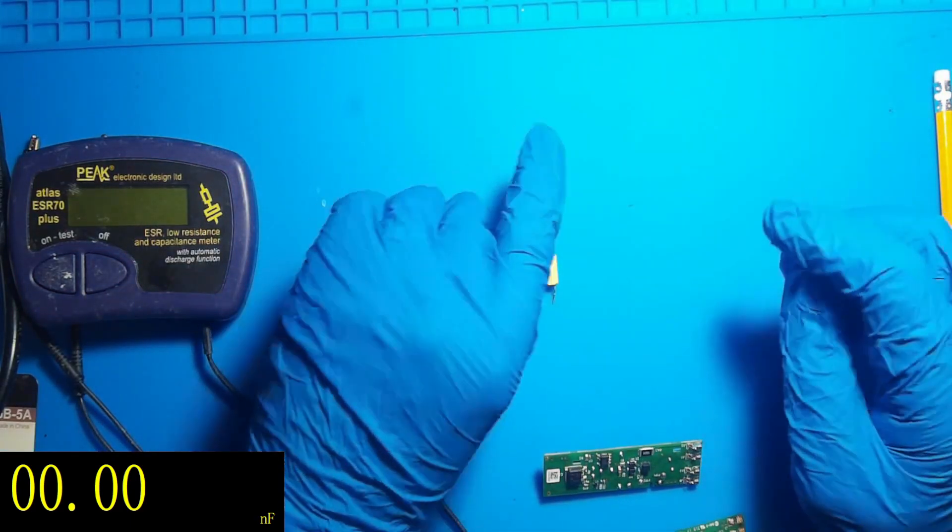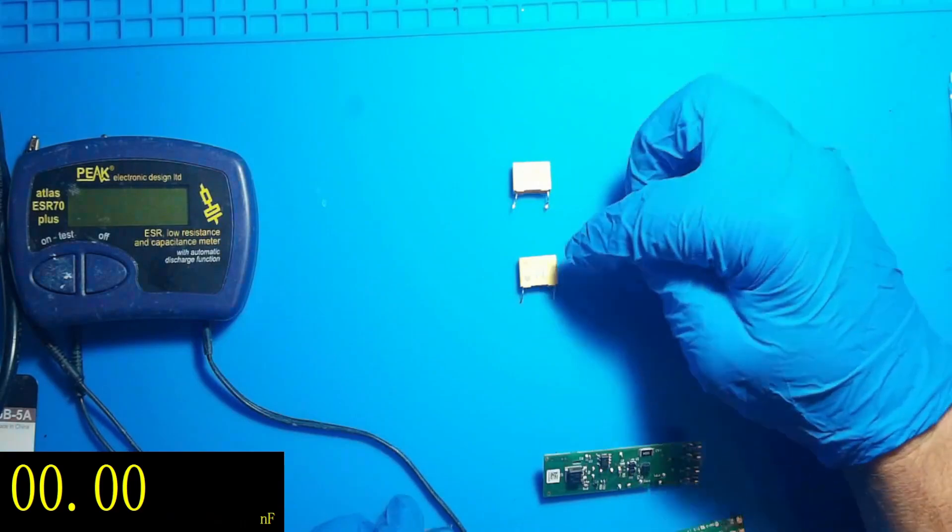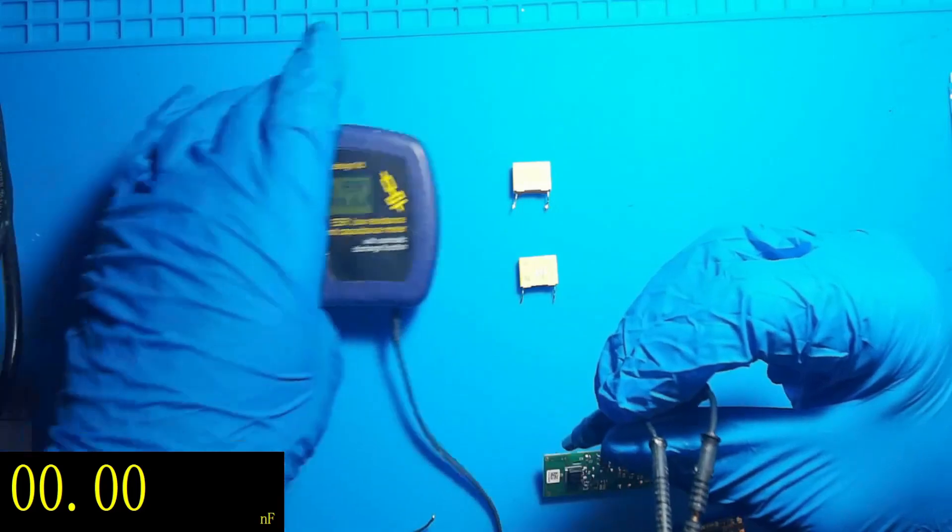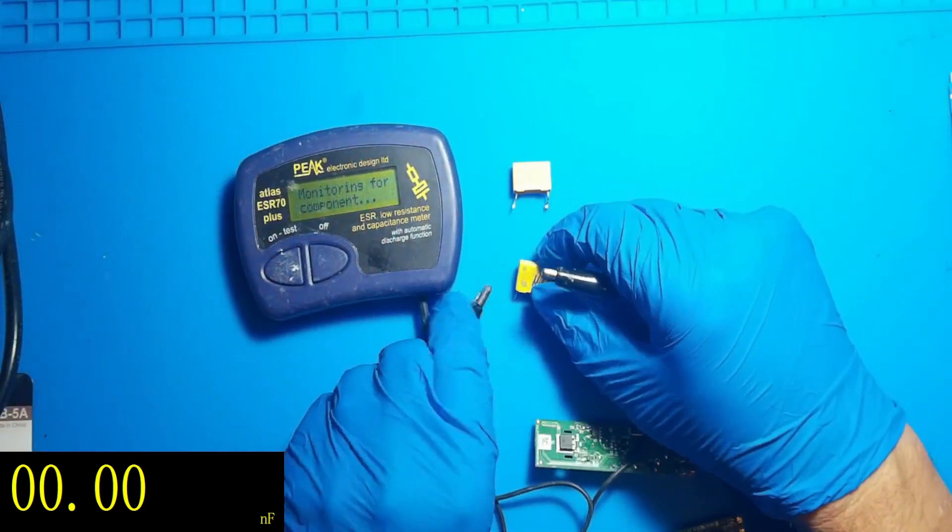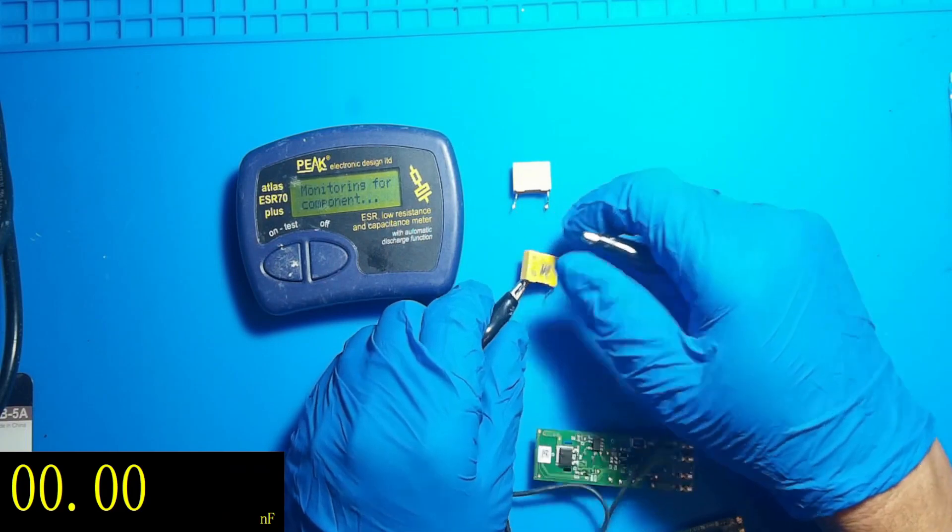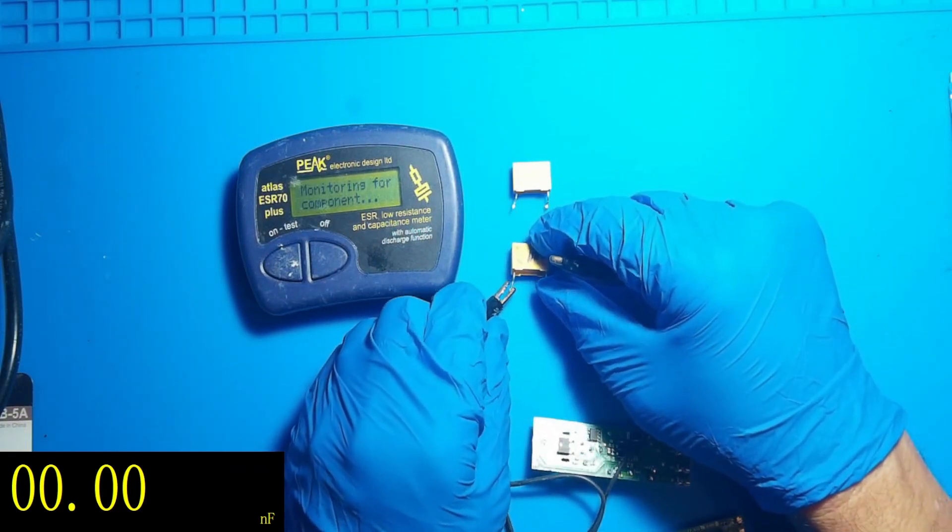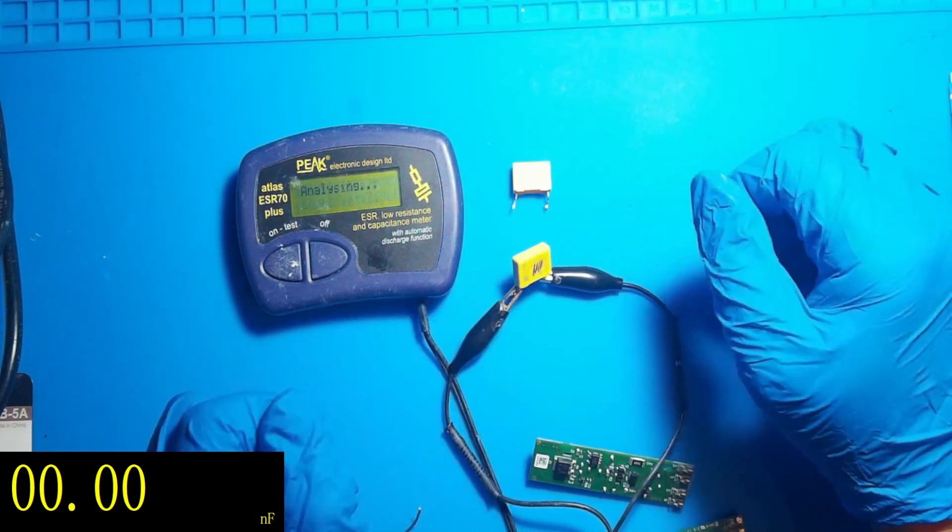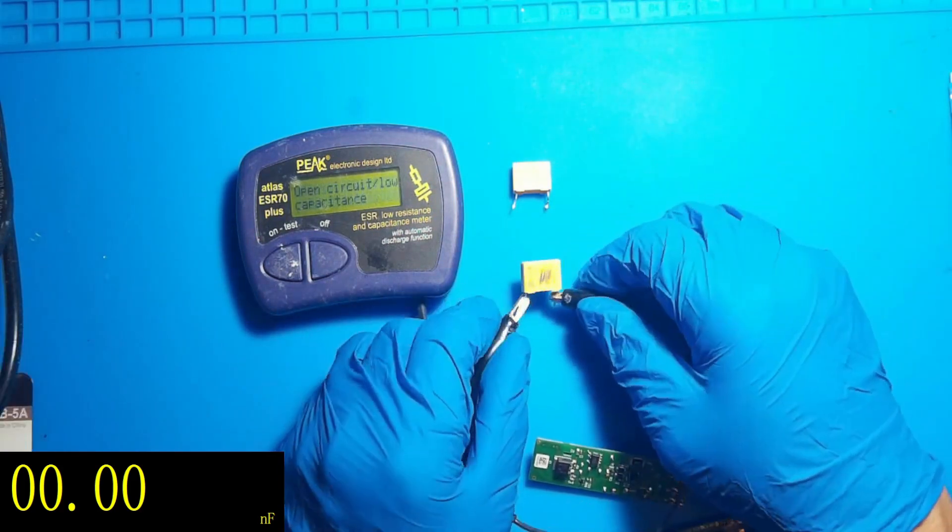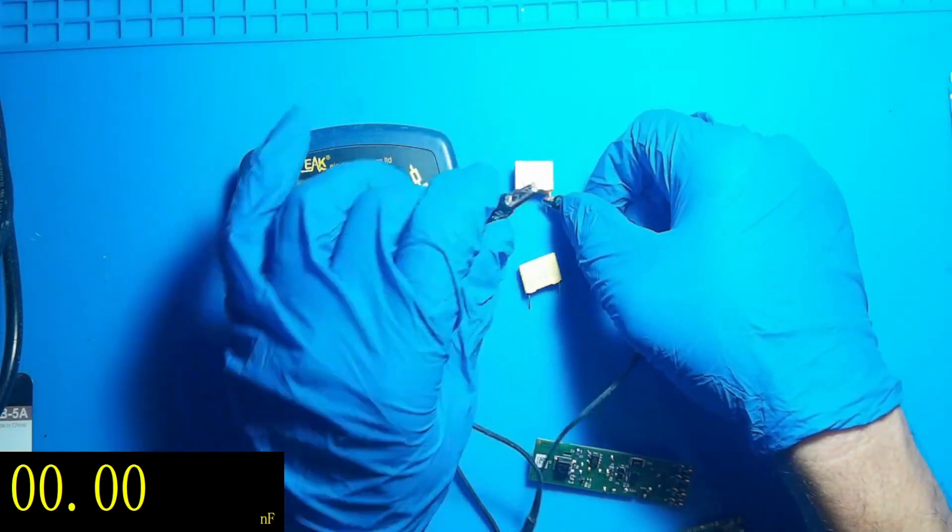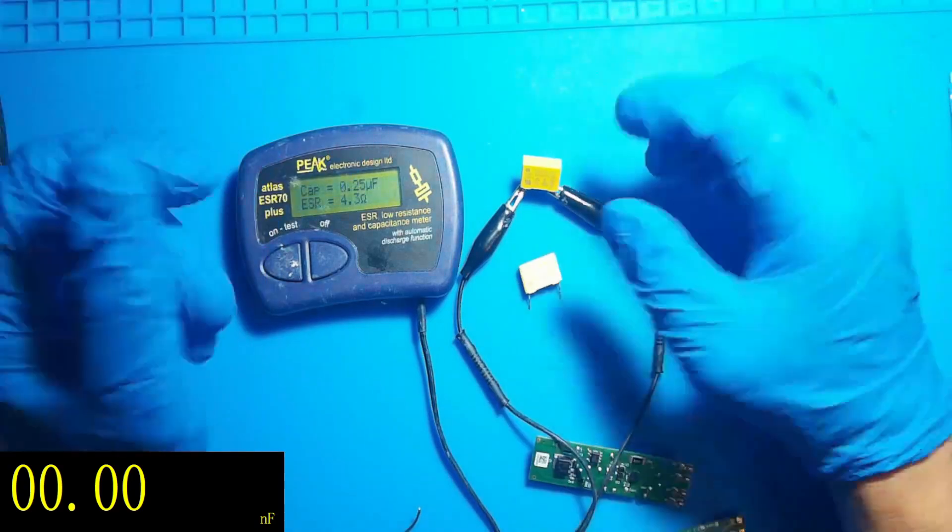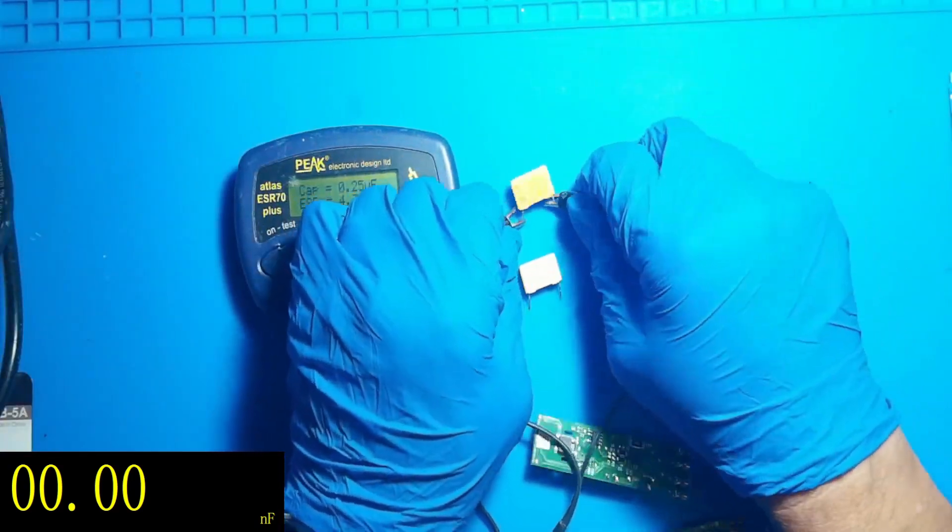There's the good one, right. So we've got two capacitors out. This one our Peak said was bad, this one our Peak says was good. So let's do the test again. Nope, it still says that one's bad. What about this one? Still says that one's good, so there's been no change.